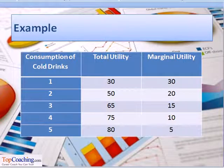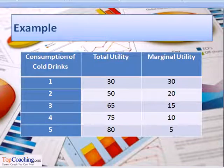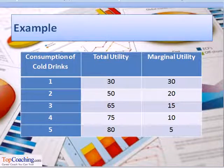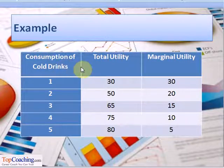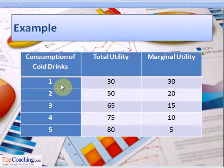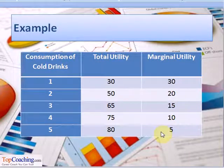Suppose a consumer consumes five bottles of a cold drink. The utility derived from the fifth bottle after drinking four bottles will be less compared to the utility from the fourth bottle after drinking three, and similarly for the third and second bottles. This is illustrated in the table: the total utility increases as the number of bottles consumed increases, but the marginal utility decreases gradually.